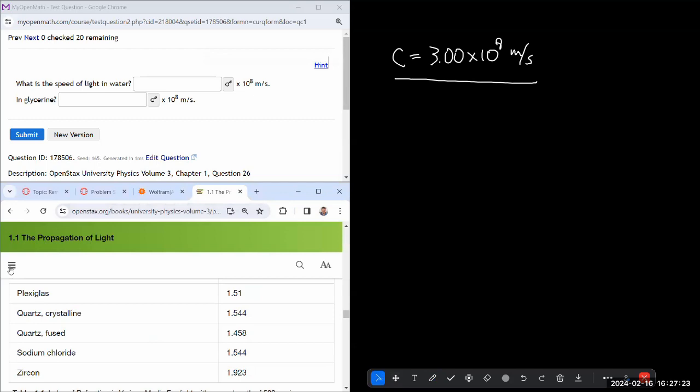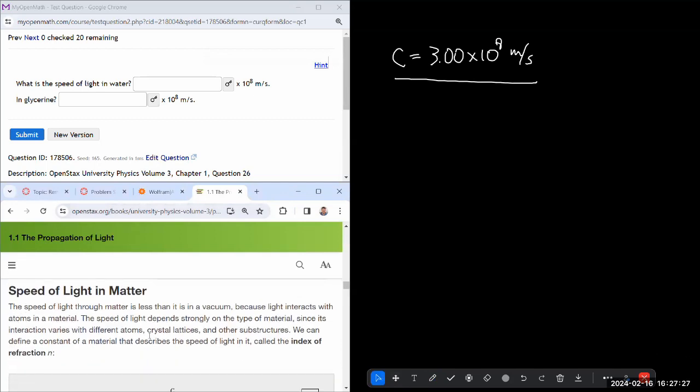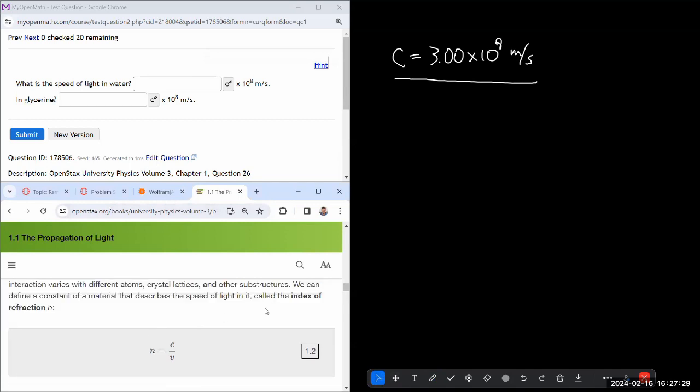So speed of light in matter, we defined index of refraction, which can be measured, and we define it using the speed of light in the matter.